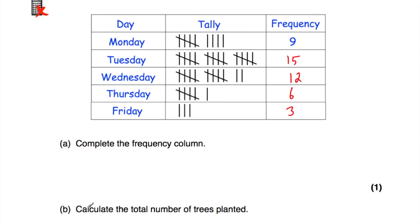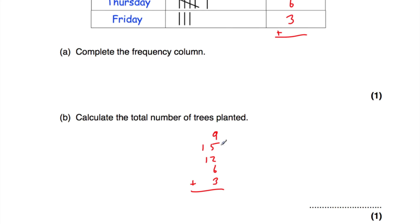Part B says calculate the total number of trees planted, so we need to add together the frequencies: 9 plus 15 plus 12 plus 6 plus 3. Nine plus 15 is 24, plus 12 is 36, plus 6 is 42, plus 3 is 45. So 45 trees were planted altogether.